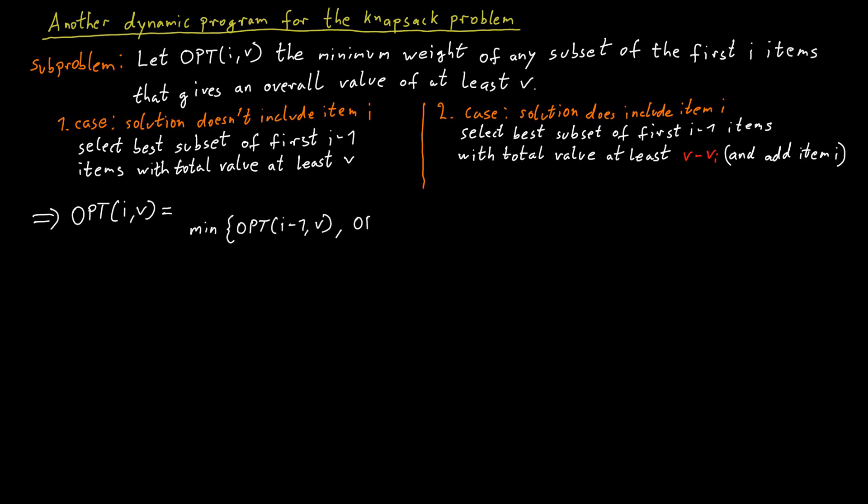We have to pay attention to some special cases. If the value v is zero or maybe even negative, then we don't need to pack any items, so the weight we need to achieve that is zero. And if we are not allowed to pack any items, but we are asked to achieve a value that is not zero or negative, but some positive value, then there's no way to do this. For that case, we simply record infinity as the minimum weight that we need to use.